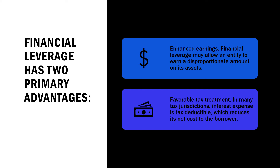This is a particular problem when interest rates rise or returns from assets decline. The unusually large swing in profits caused by large amounts of leverage increases the volatility of a company's stock price. This can be a problem when accounting for stock options issued to employees, since highly volatile stocks are considered to be more valuable and so create a higher compensation expense.